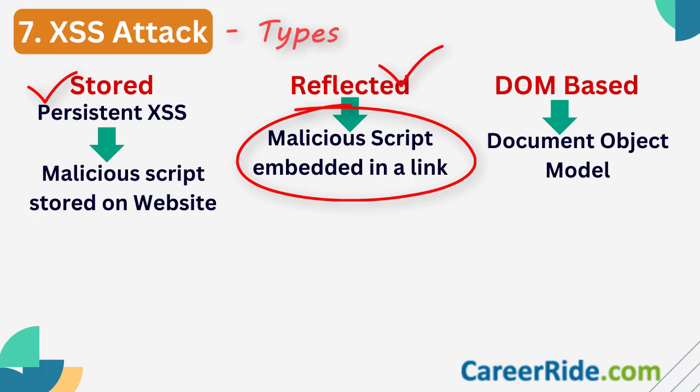The third type is DOM-based XSS, where the attack happens in the document object model (DOM). The HTML document is manipulated using malicious scripts after it has been loaded. This kind of attack can cause major havoc by stealing sensitive information, defacement of the website, session hijacking, etc. Providing depth to an answer by covering the types of attacks is what separates a strong answer from an average one.